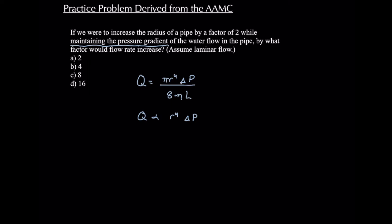So if we increase the radius by a factor of 2, we could write this as 2r to the 4th delta P. Now if we apply that exponent of 4 to every variable that's inside those parentheses, we can write this equation as Q is proportional to 2 to the 4th times r to the 4th delta P.